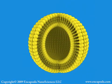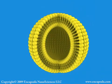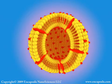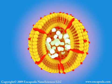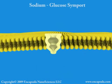Fluorescent liposomes can be made by encapsulating fluorescent molecules in the aqueous interior of the liposome, or by adding fluorescent lipids to the bilayer. In some cases it is useful to have both the aqueous content and the lipid bilayer labeled simultaneously with different fluorophores. Liposomes are important tools for characterizing membrane-associated proteins in their native environment.